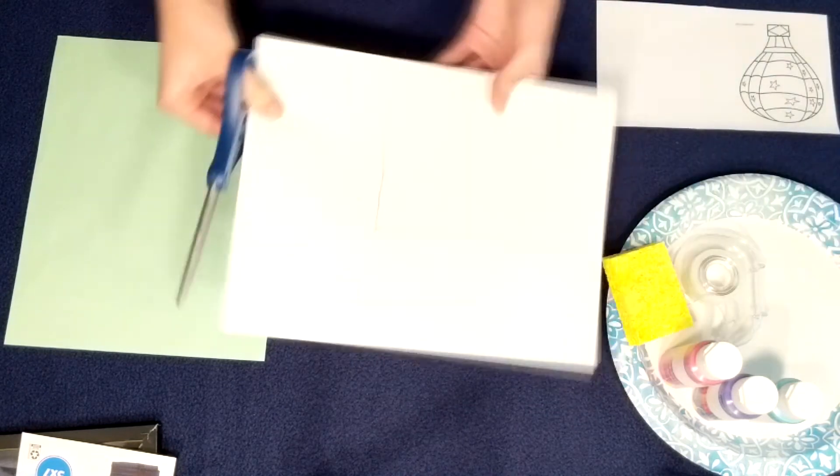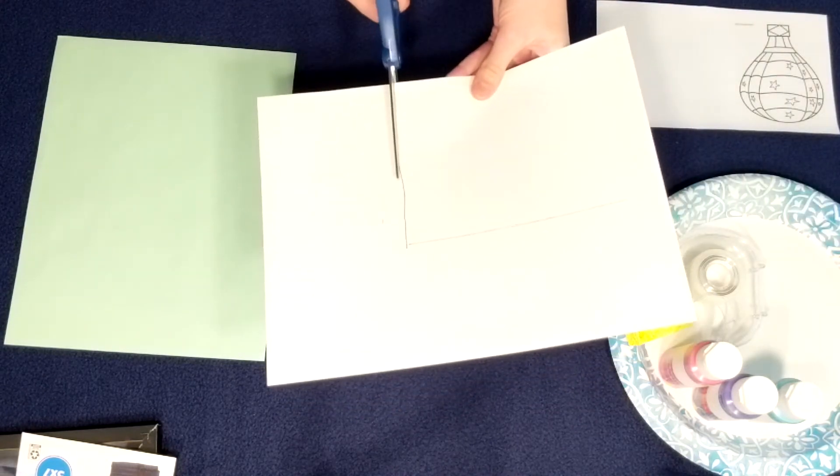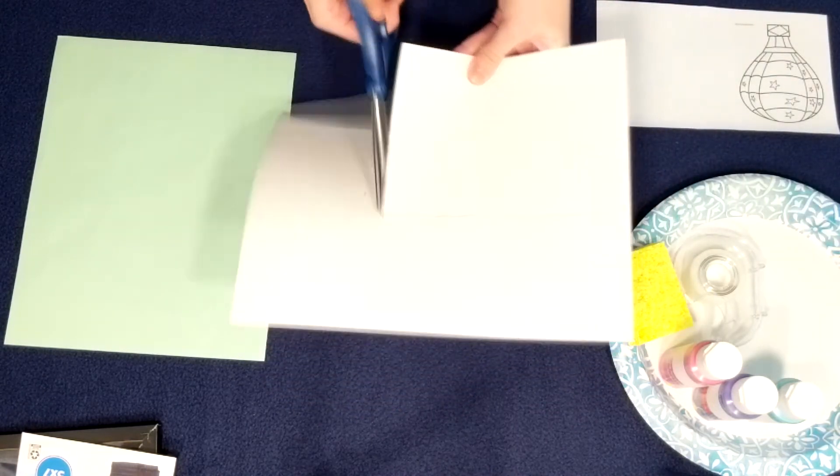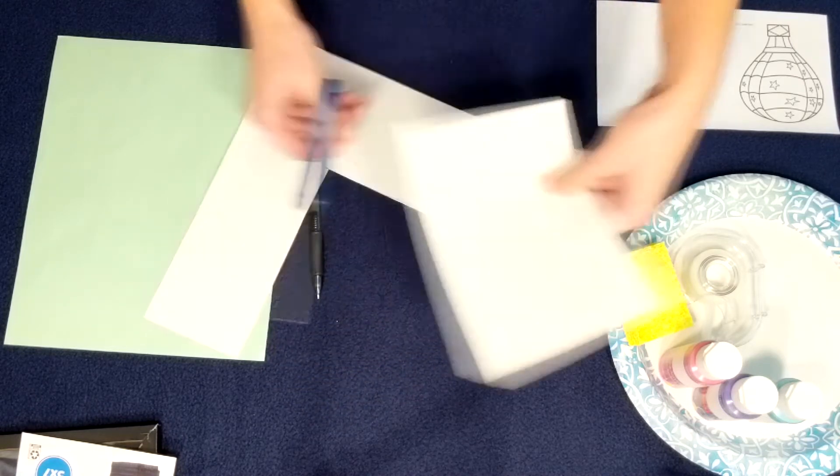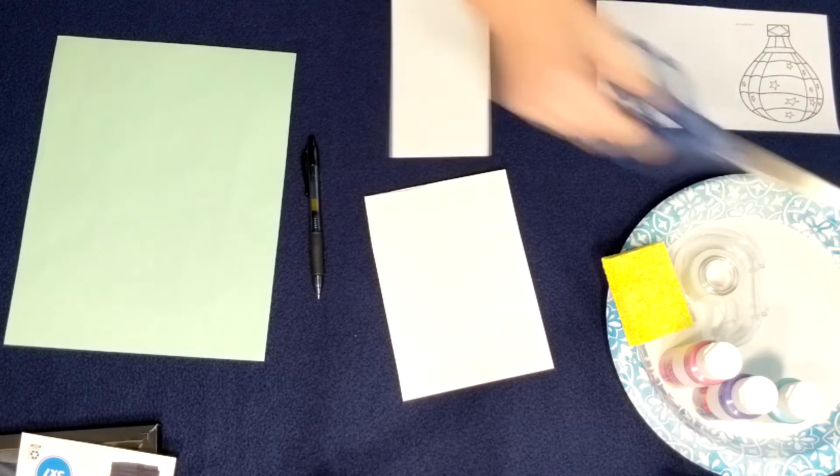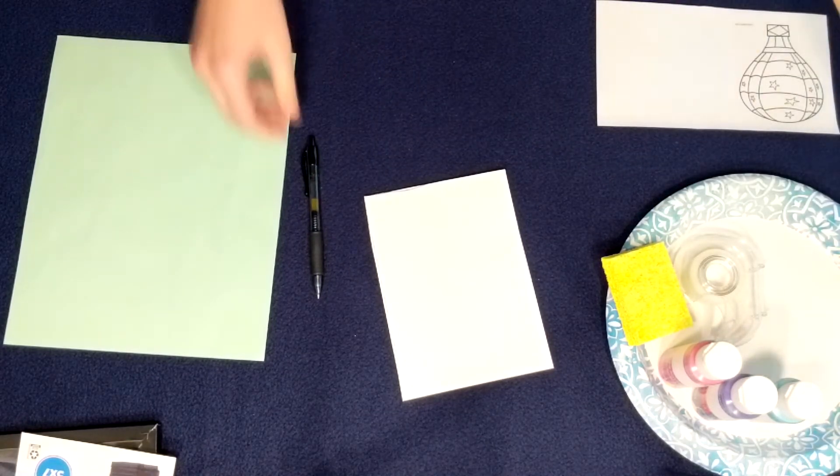Then take your pair of scissors and you're gonna cut. Reminder, it doesn't have to be perfect because it'll be hidden by the frame. Then you can put your scissors off to the side as well as the piece of paper.